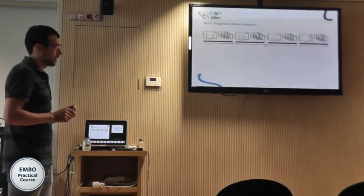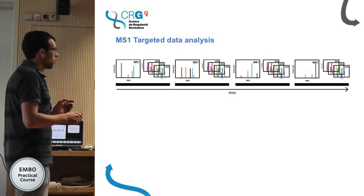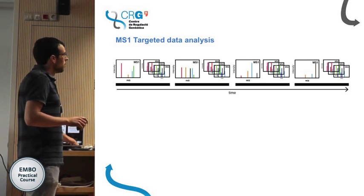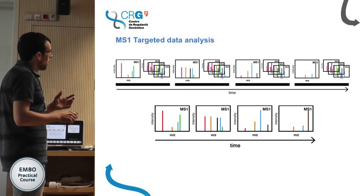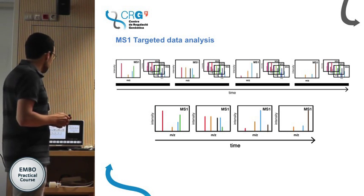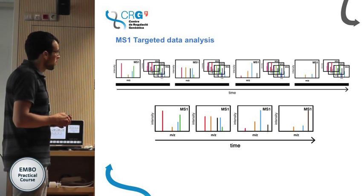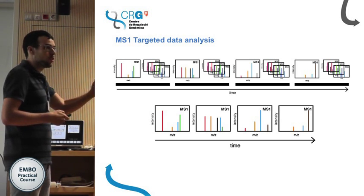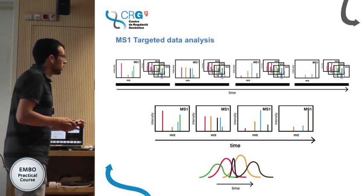MS1 targeted data analysis is very similar to the shotgun workflow shown before: an MS1 and a set of MS2 triggered based on the intensities of the MS1, repeated in several cycles. If I put all the MS1 spectra next to each other, you can see that this red peak is decreasing along time, the yellow one is increasing and then decreasing, the blue one is increasing then decreasing, and the brown one is the peptide eluting the latest.